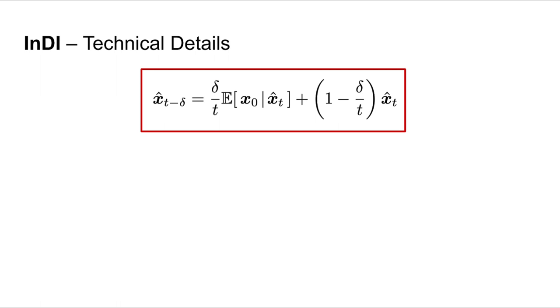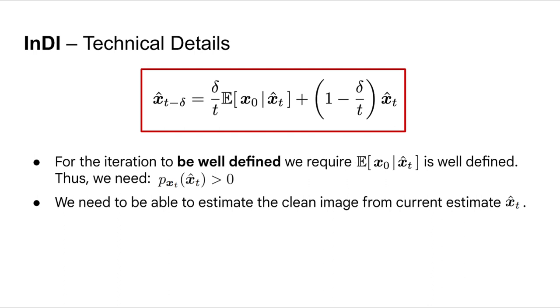Let's dig a little deeper on the technical details. This is the INDI iteration. Given that we have an estimate at time t, then we need to compute the MMSE estimate of the clean image from x_t, and then do this convex average to get the updated estimate. For the iteration to be well-defined, we require to be able to compute the MMSE estimate given our current x_t. This implies that no matter what our current estimate is, we should have non-zero probability density function.